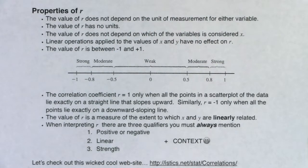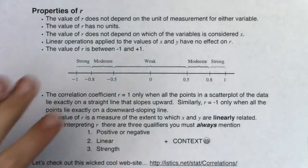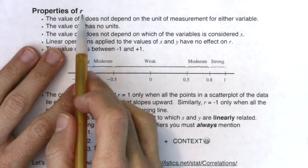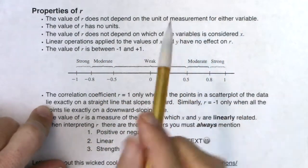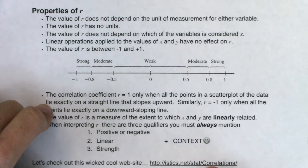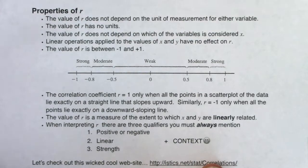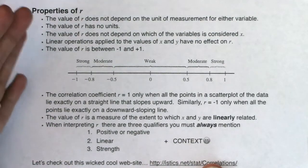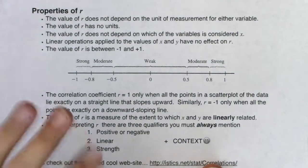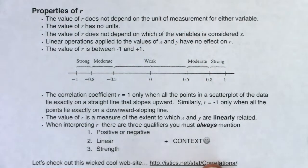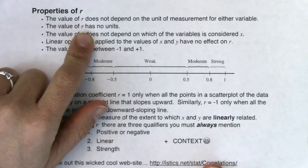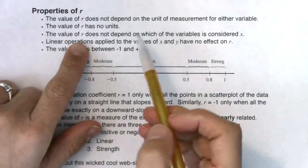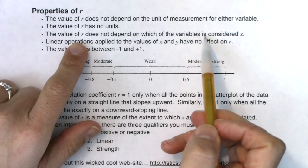Now that we've looked at how to calculate R, let's discuss a few of the properties of this number. For the properties of R, our correlation coefficient: the value of R does not depend on the unit of measurement for either variable. So if your X variables were some distance measured in feet and you converted to inches, that change in unit of measurement has no bearing on your value of R. The value of R itself has no units.